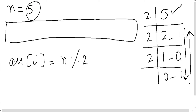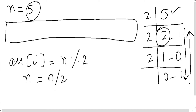Second time jab hum 2 se divide kar rahe hain to n humara change ho chuka hai. Each time jab loop chalay ga, n ko 2 pe divide karte jayenge — pehle five tha, phir two, phir one, phir zero. Loop ki condition: jab tak wo zero se bada rehta hai tab tak chalo, aage na jao.